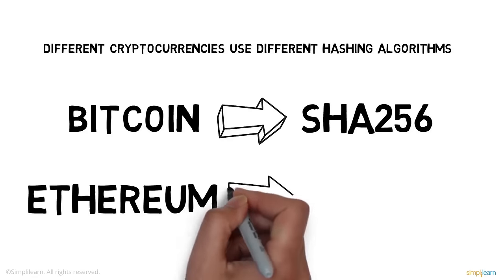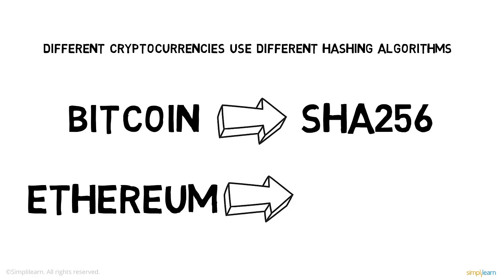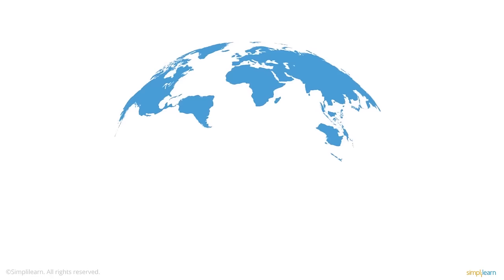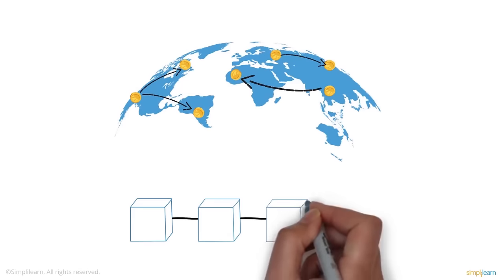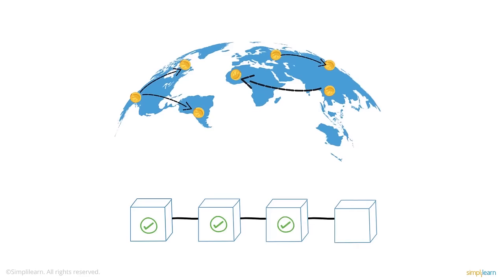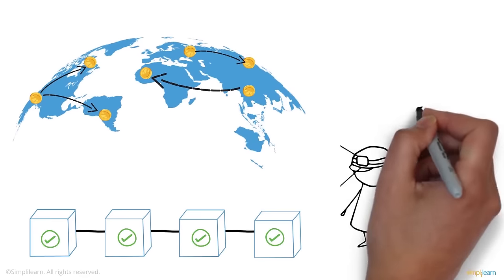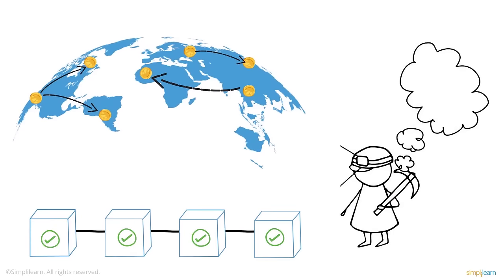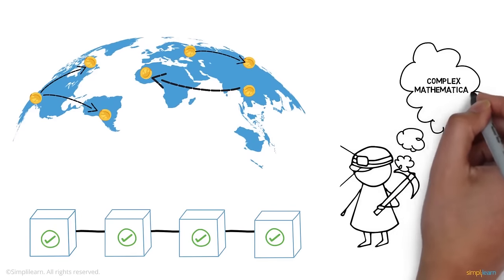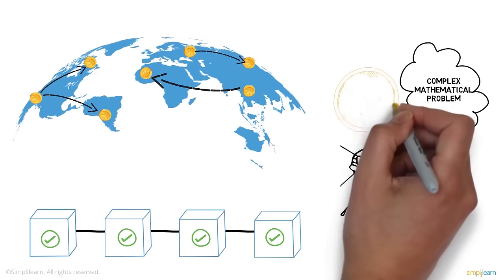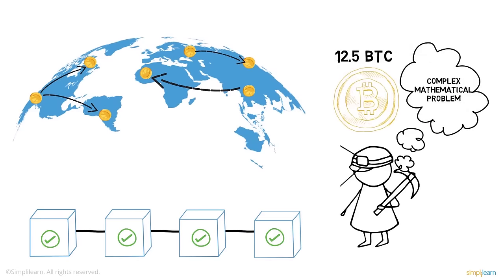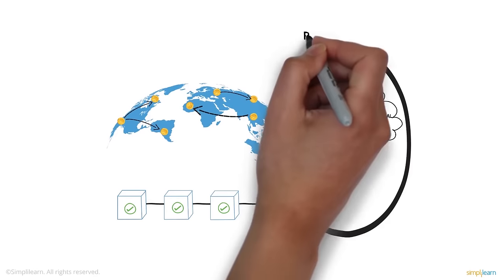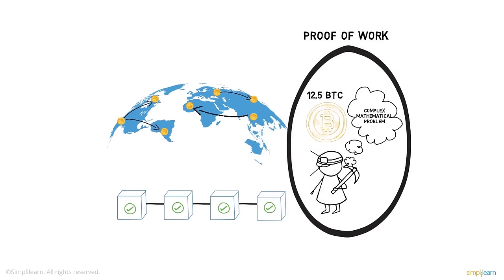Different cryptocurrencies use different hashing algorithms: Bitcoin uses SHA-256, while Ethereum uses Ethash. These transactions, taking place all around the world, are validated and added block by block. The people who validate these blocks are called miners. For a block to be validated and added to a blockchain, miners need to solve a complex mathematical problem. The first miner to solve it adds the block and is rewarded with 12.5 bitcoins.